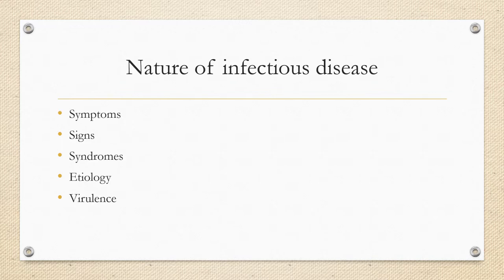Symptoms are a subjective experience within a disease state, a change perceived by the patient. A sign is an objective finding by a physician during an examination. A syndrome is a group of lab findings, signs and symptoms, and physiological disturbances linked to a pathology. Etiology means the cause of the disease, and virulence has to do with the properties that influence how pathogenic an organism actually is.